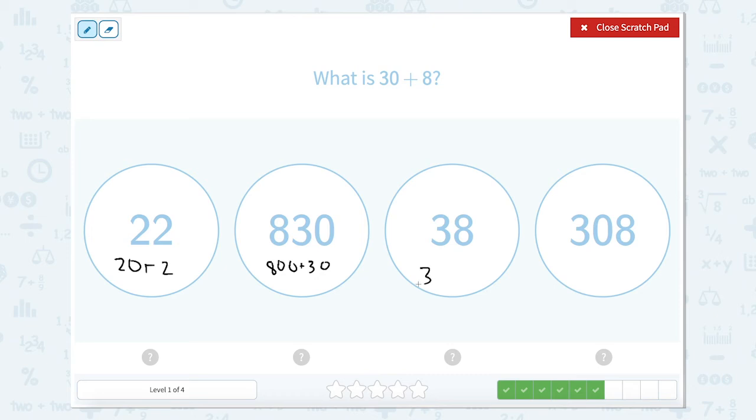This one would be 30 plus 8, and this would be 300 plus 8. So, which one is equal to 30 plus 8? 38.